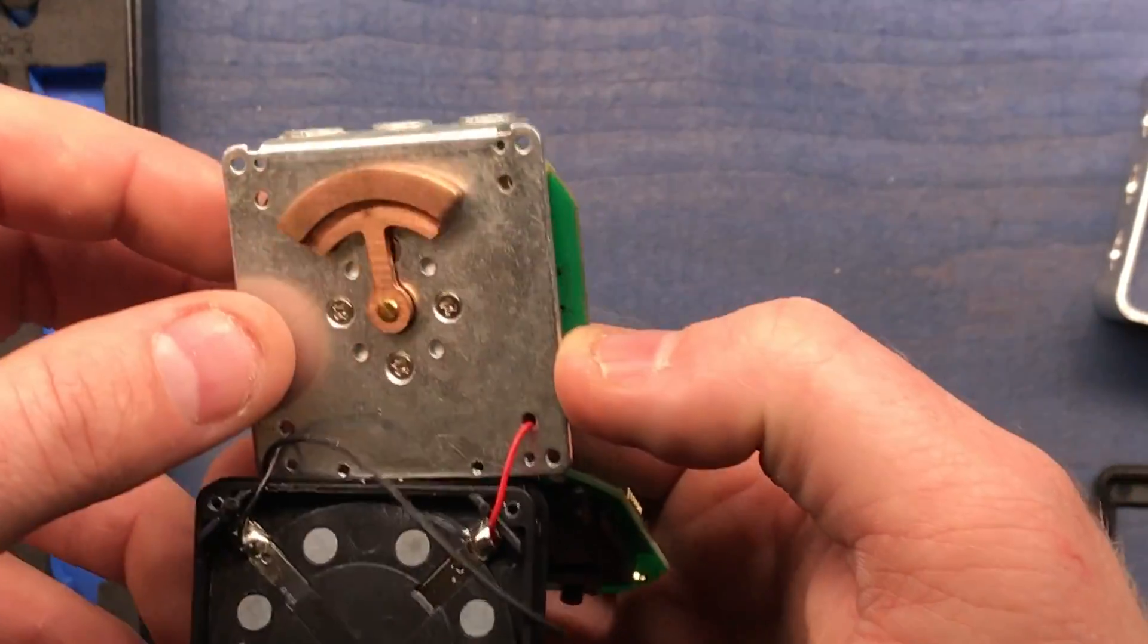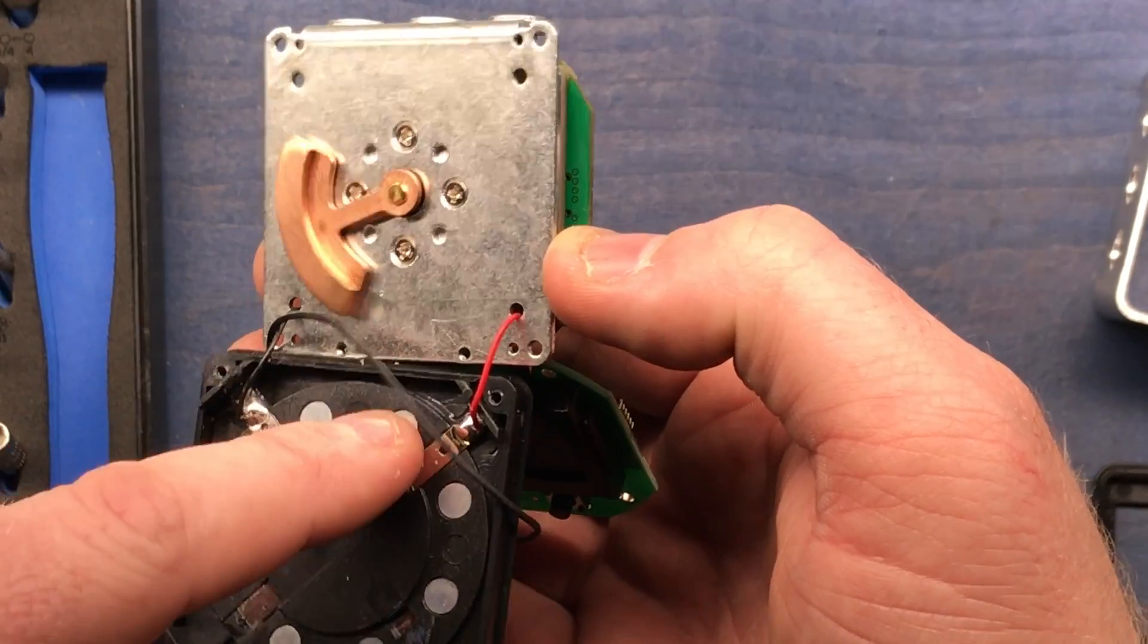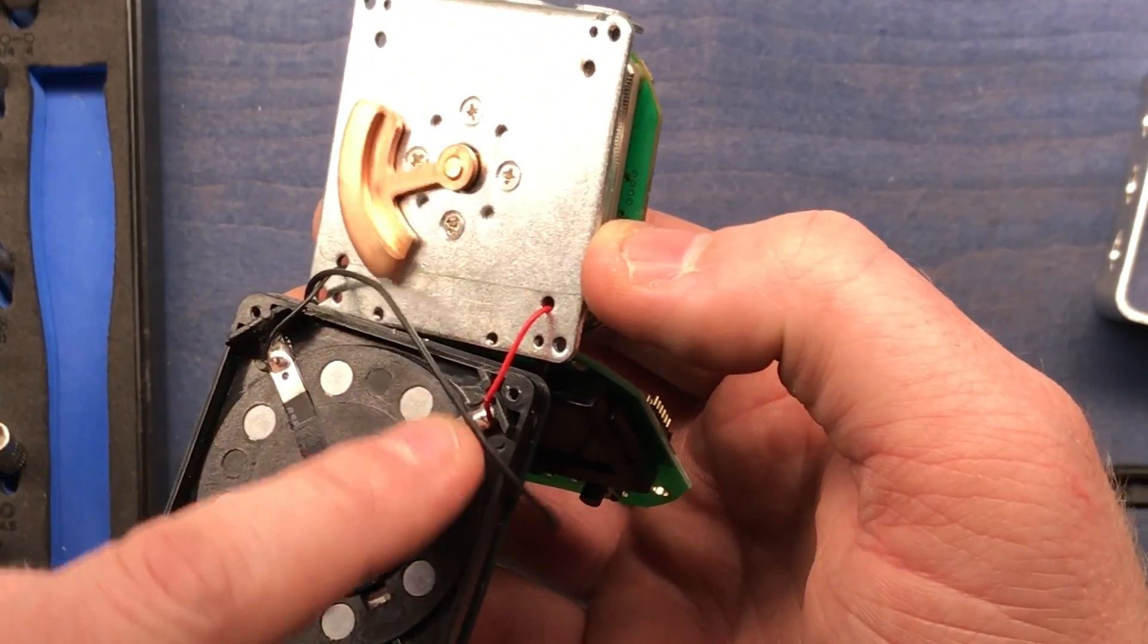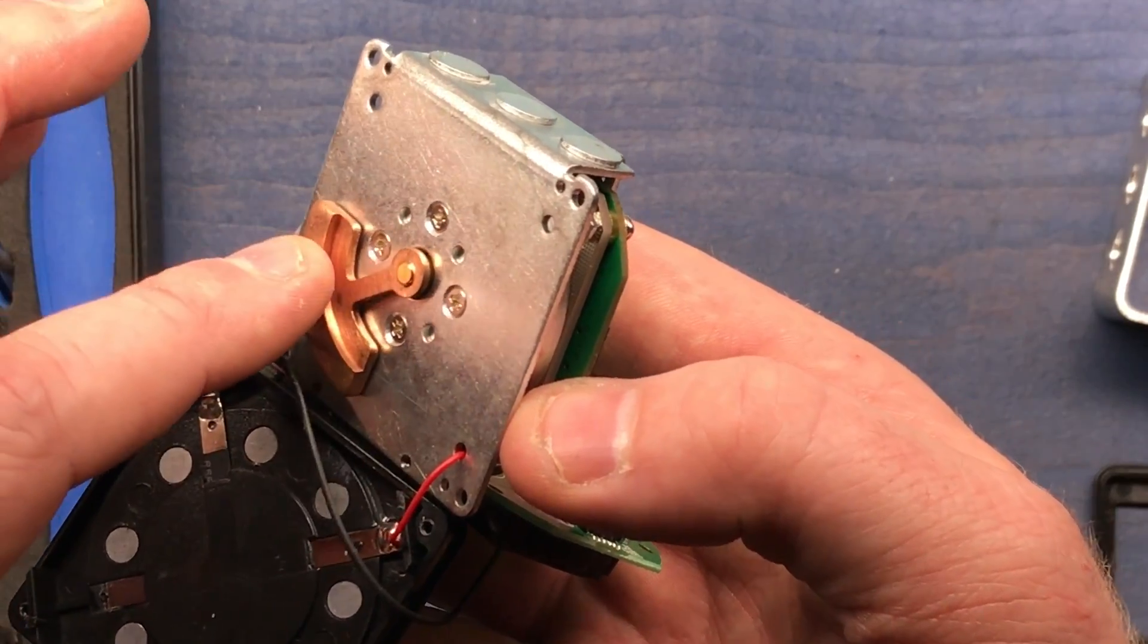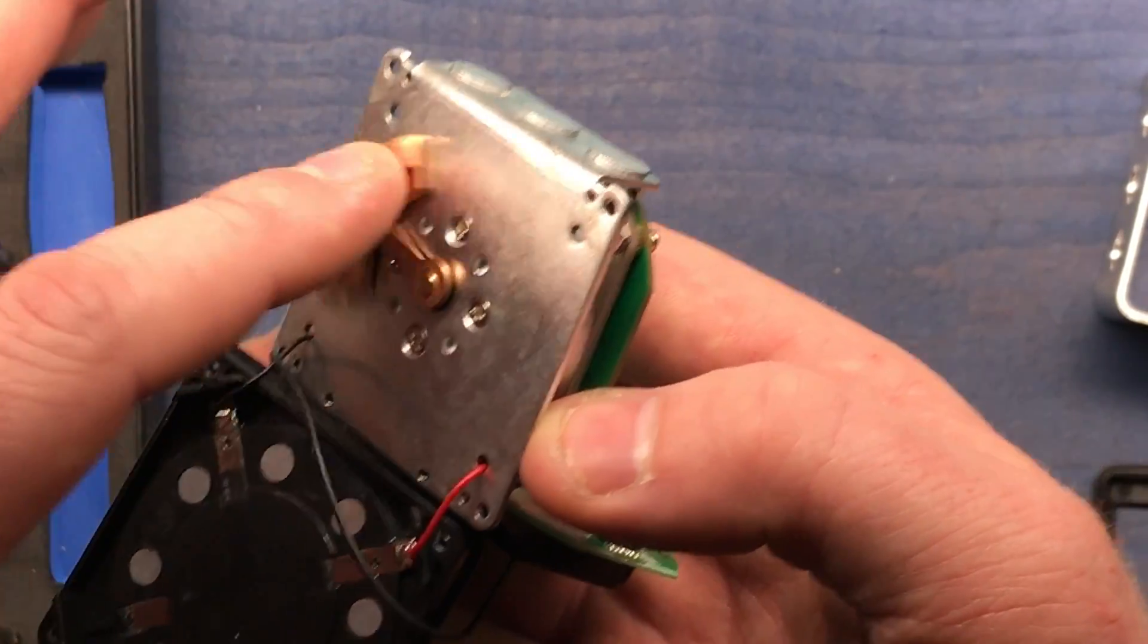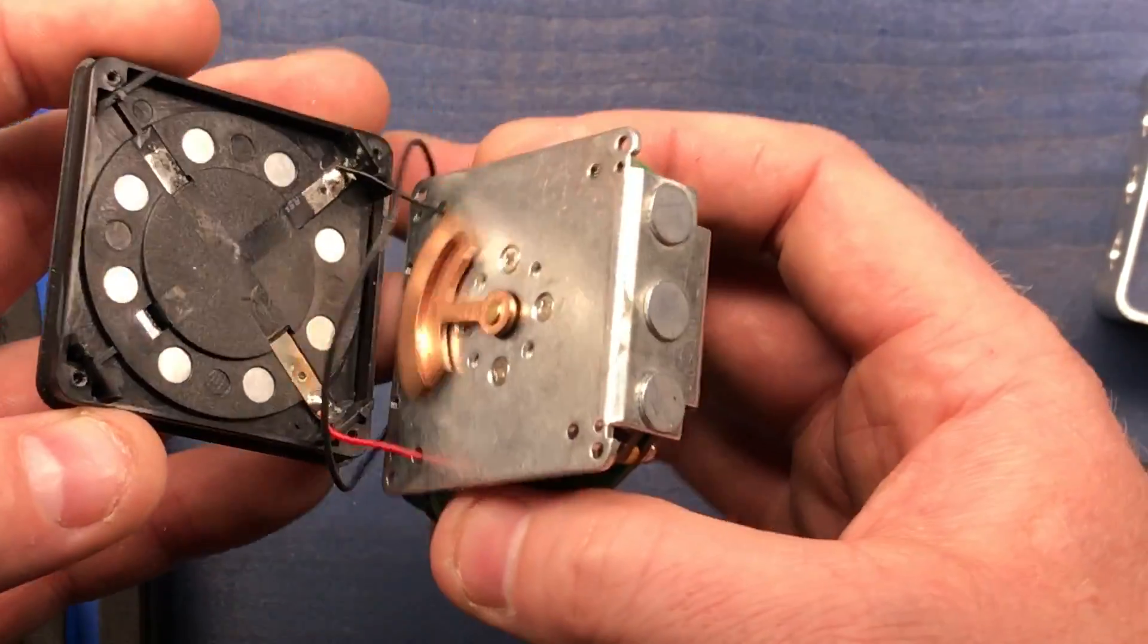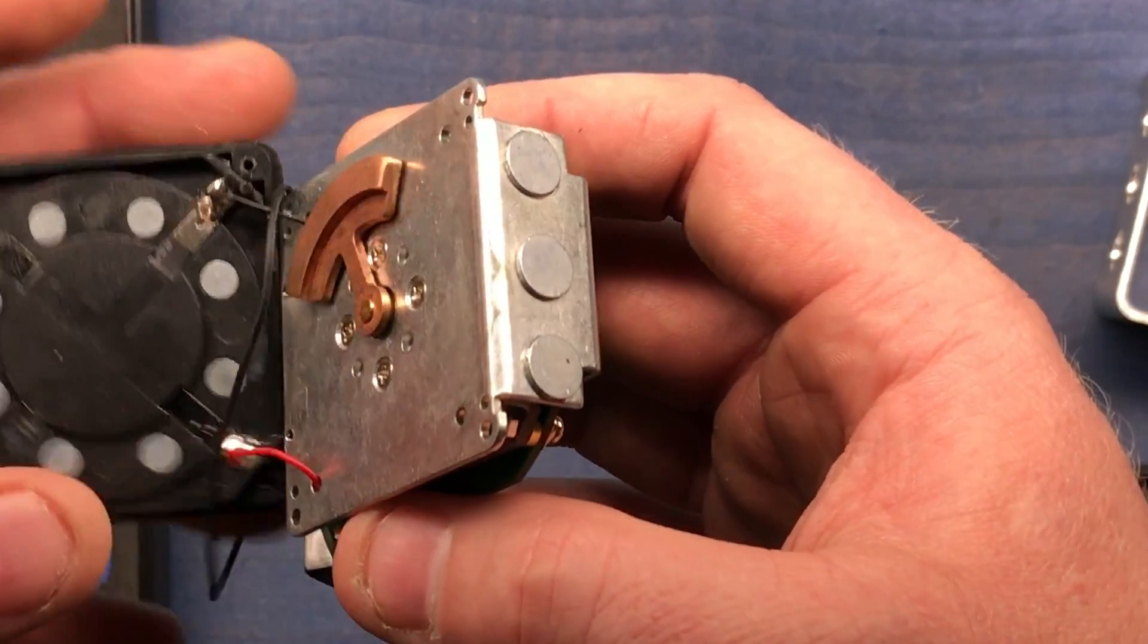And so these are magnets. These eight circles here are magnets, and they're actually being used for eddy current damping.